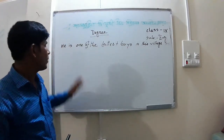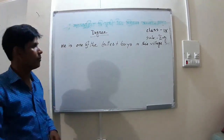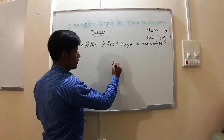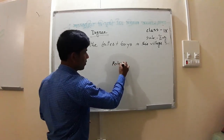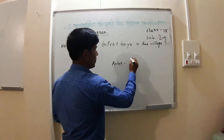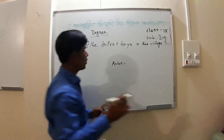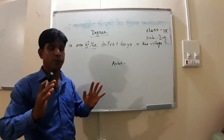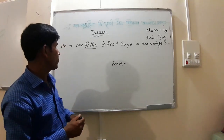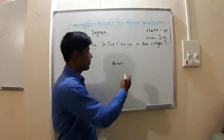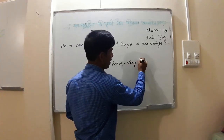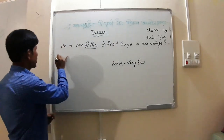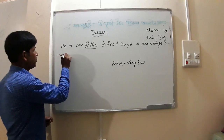Now for converting superlative to positive, instead of 'one of the,' you will place 'very few' — v-e-r-y f-e-w. So 'one of the tallest' becomes 'very few' in the positive form.